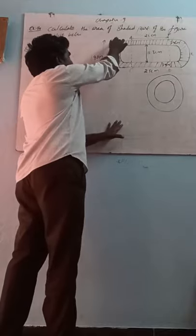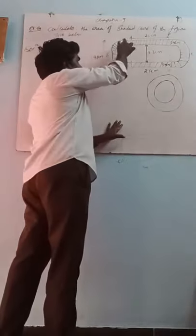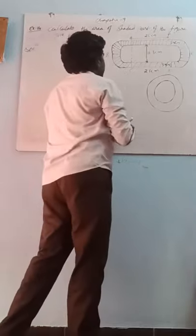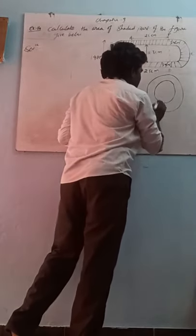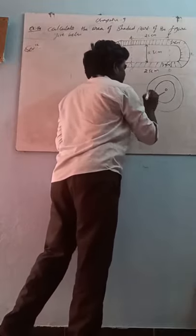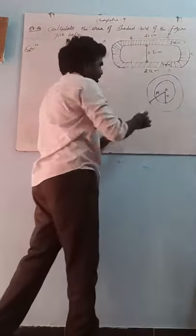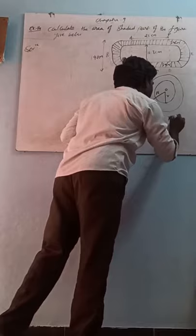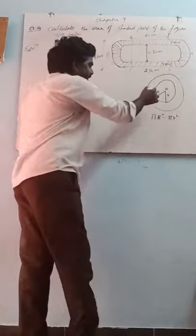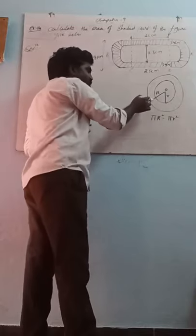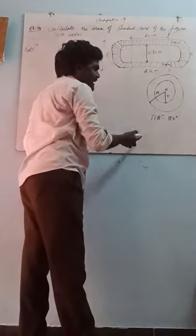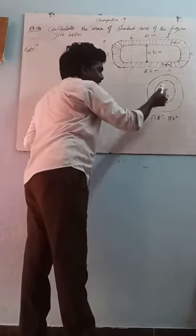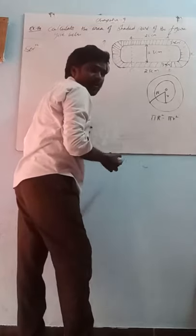This shape is in the form of a semi-circular part. A semi-circular part means half of the circular part. Here, the outer circle radius is capital R and the inner circle radius is small r. So the area of the circular part is: π R² minus π r². Radius means the distance between the center of the circle to any point on the circle.